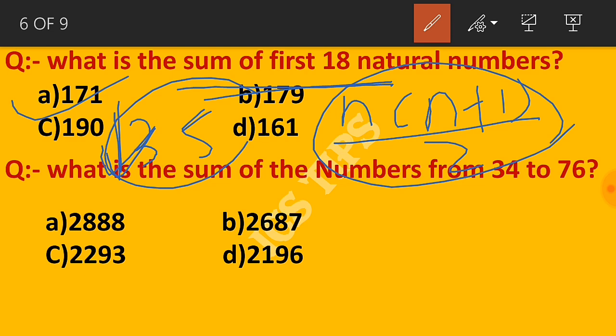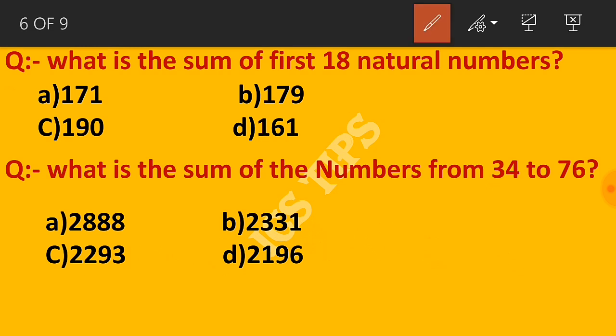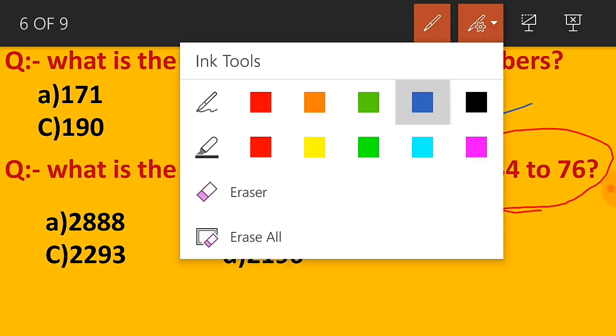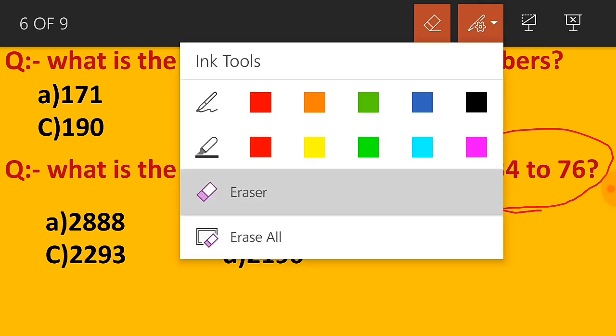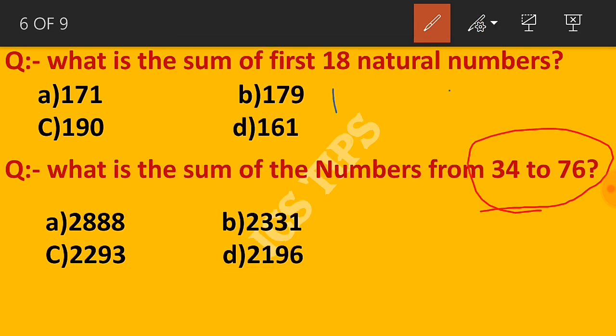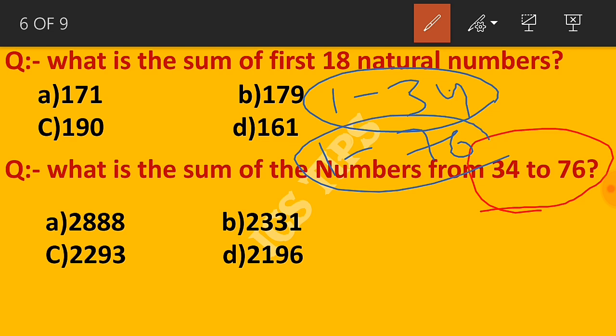Question: What is the sum of numbers from 34 to 76? First find the sum of 1 to 34, then sum of 1 to 76, then subtract.